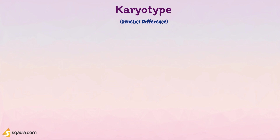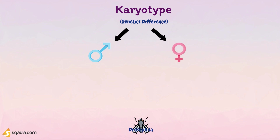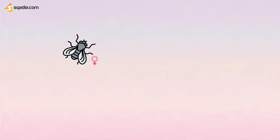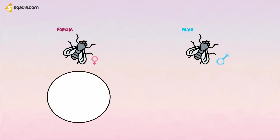Let's see this difference and identify the male and female individuals in Drosophila and humans. In Drosophila, there are four pairs — meaning eight chromosomes total. Three pairs of chromosomes are identical in female and male, and these are called autosomes. The fourth pair of chromosomes is different in male and female, determines gender, and these are called sex chromosomes.